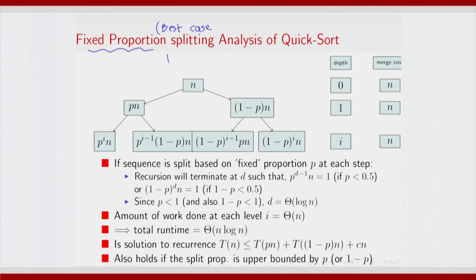At the next level again there will be a split p²n and p(1-p)n, and so on until you reach p^i · n and p^(i-1)(1-p)n. The best case would actually correspond to the merge sort algorithm where p is 0.5, where at every level the array gets split into 2 subarrays of equal length.